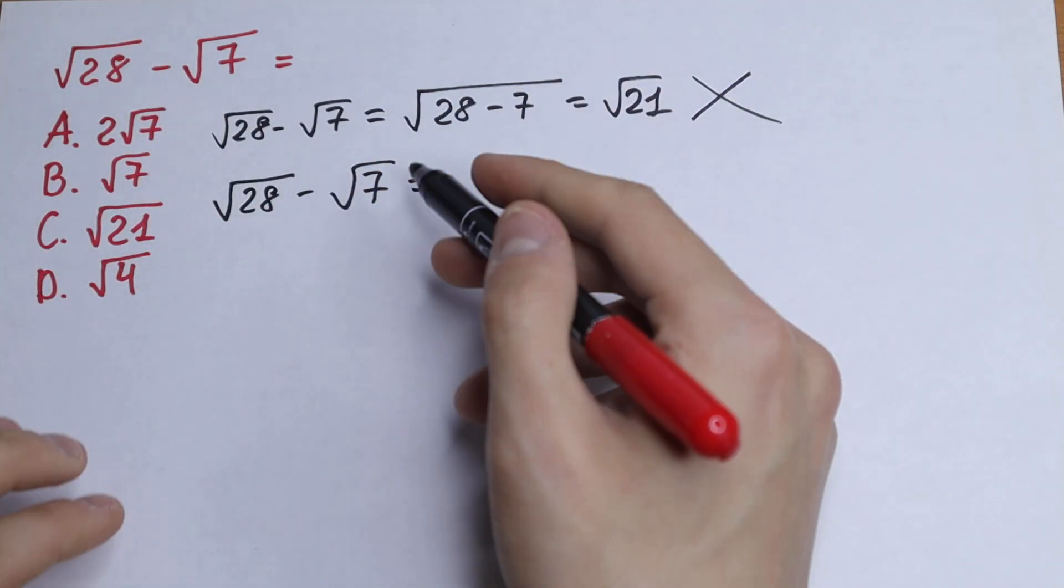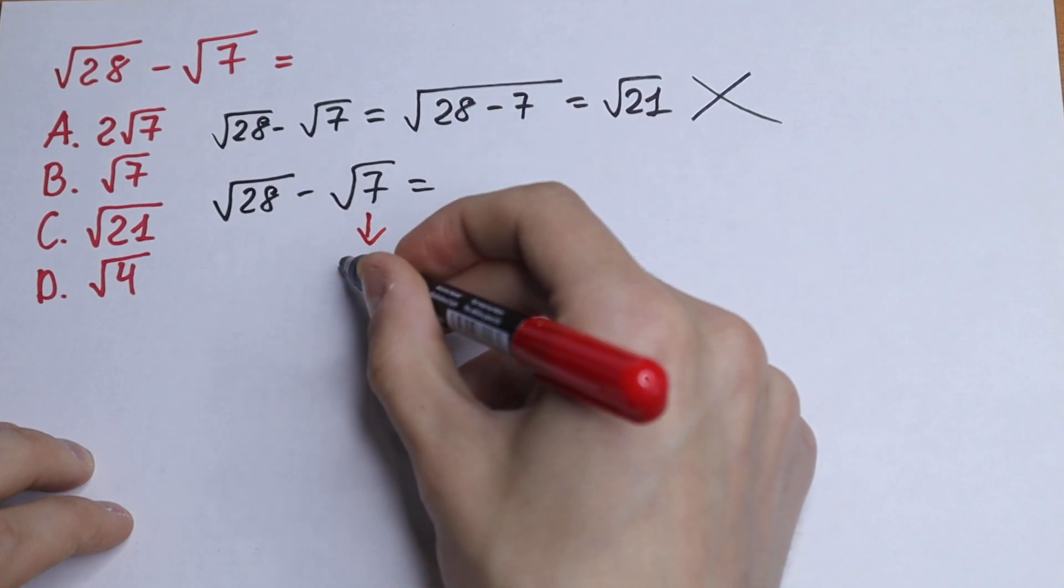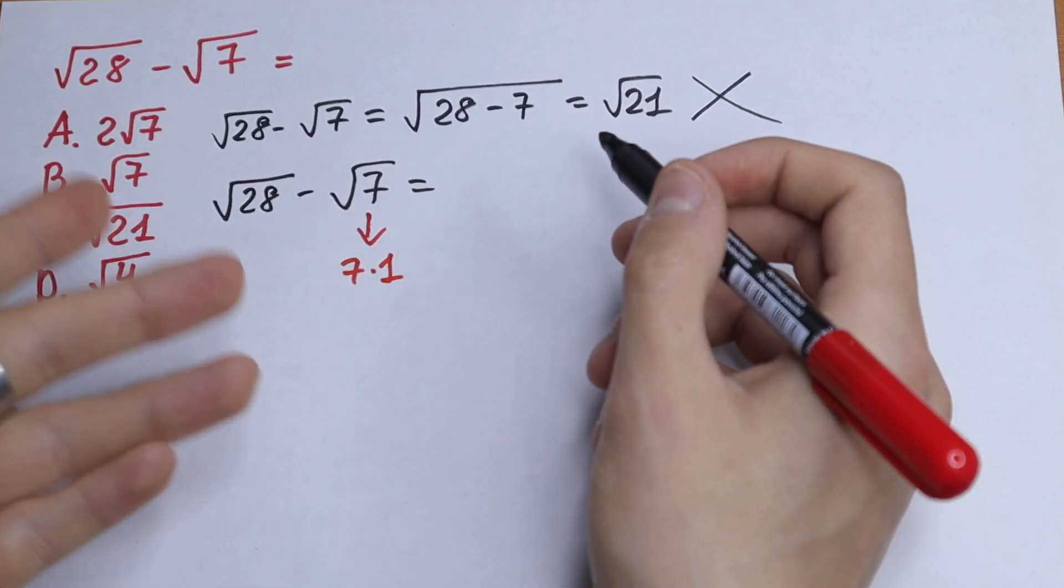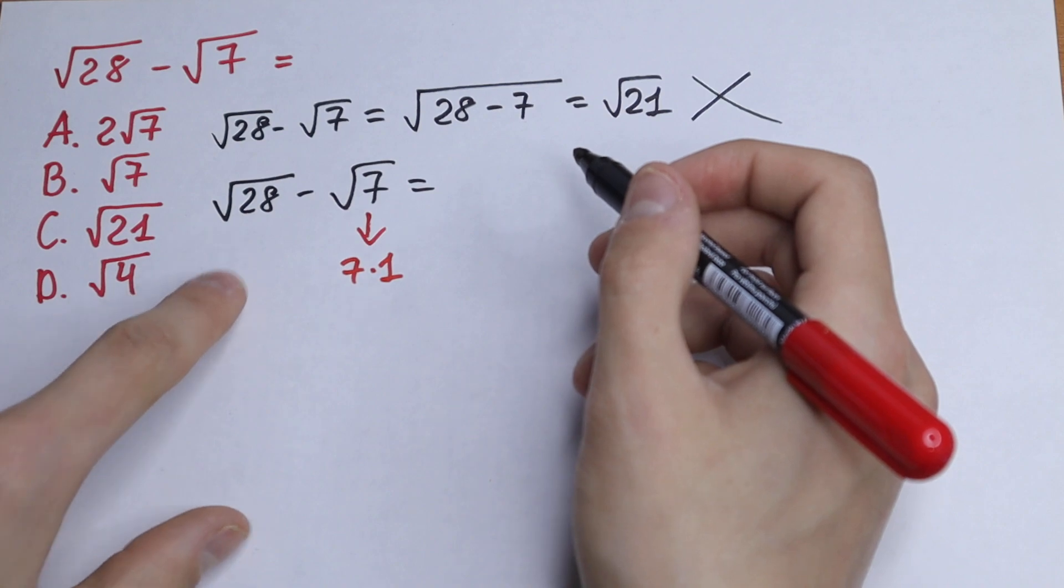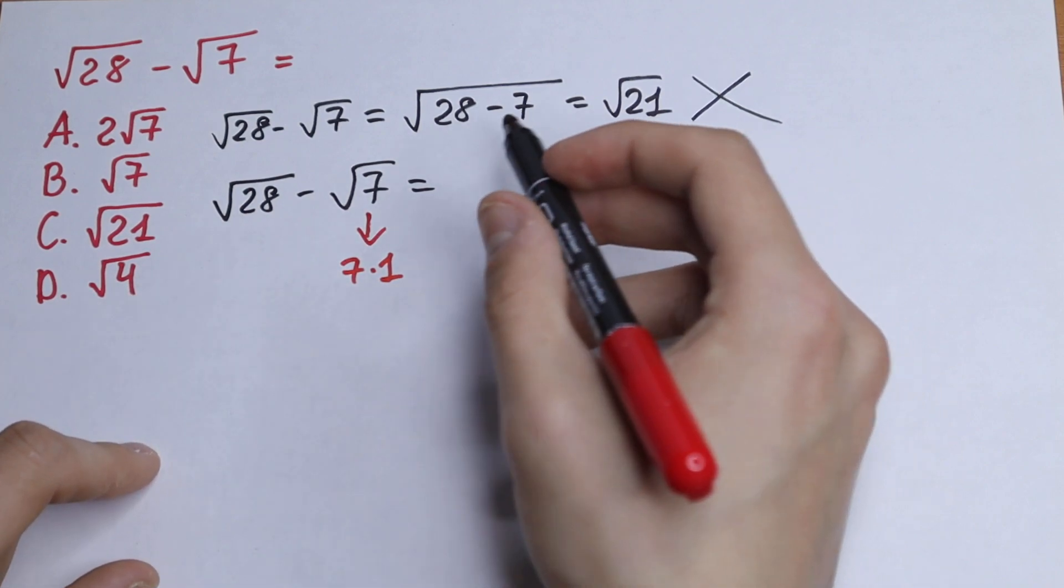As you can see right here, we have 7. 7 is not a good number because it can be written as 7 times 1, which is not good for us. But take a look right here. We have 28. How can we express this 28?